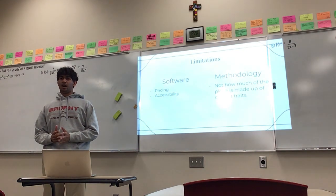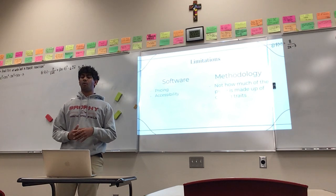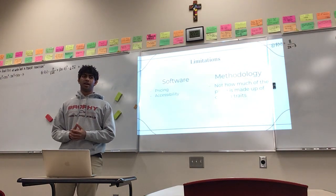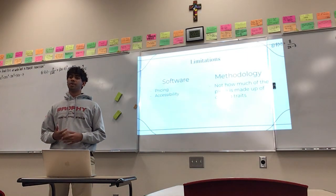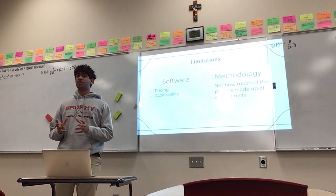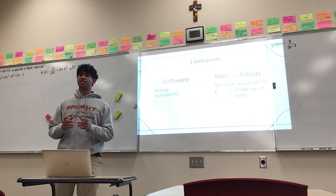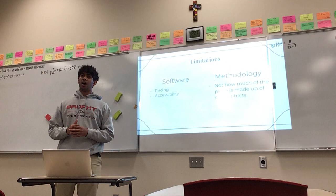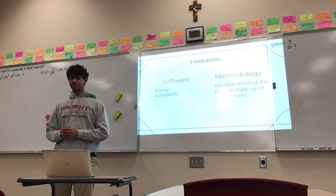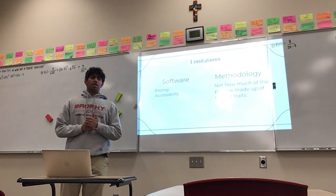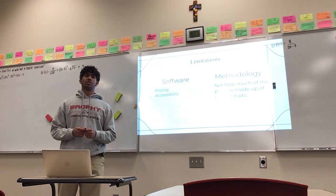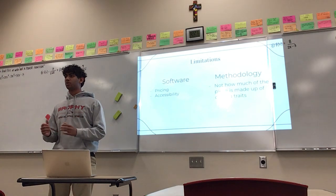Some limitations I encountered were with my software. I wanted to use a different program but ended up using Atlas.ti because it had a student-accessible option costing $50, compared to the other software which would have provided more functionality but cost around $1,000. Methodologically, I was not able to examine how much of the piece was covered by a certain color or value, but only how many squares contained it. Because of that, I can't specifically quantify how much of each emotion is present in each piece. I also wanted to include shape, but that wasn't feasible without software that could measure the proportion of the piece made up by a given color or value.